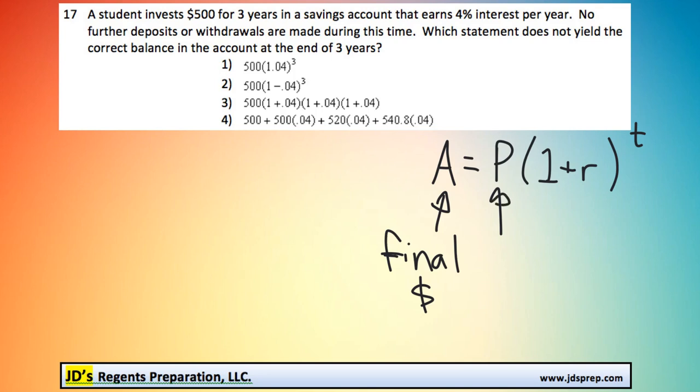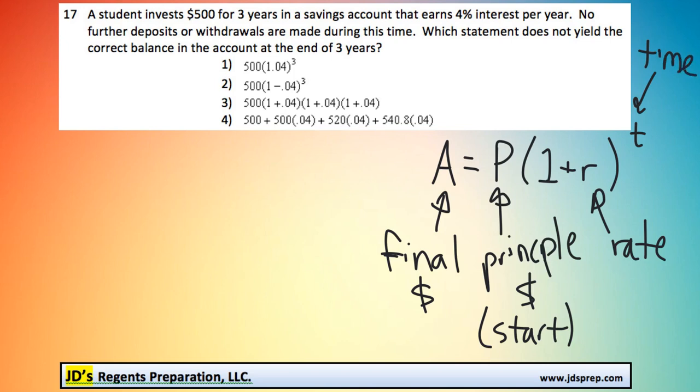The P stands for the principal or starting value of your investment. The r stands for the rate or the interest rate. And then t, as you might guess, is the amount of time of the loan or investment.